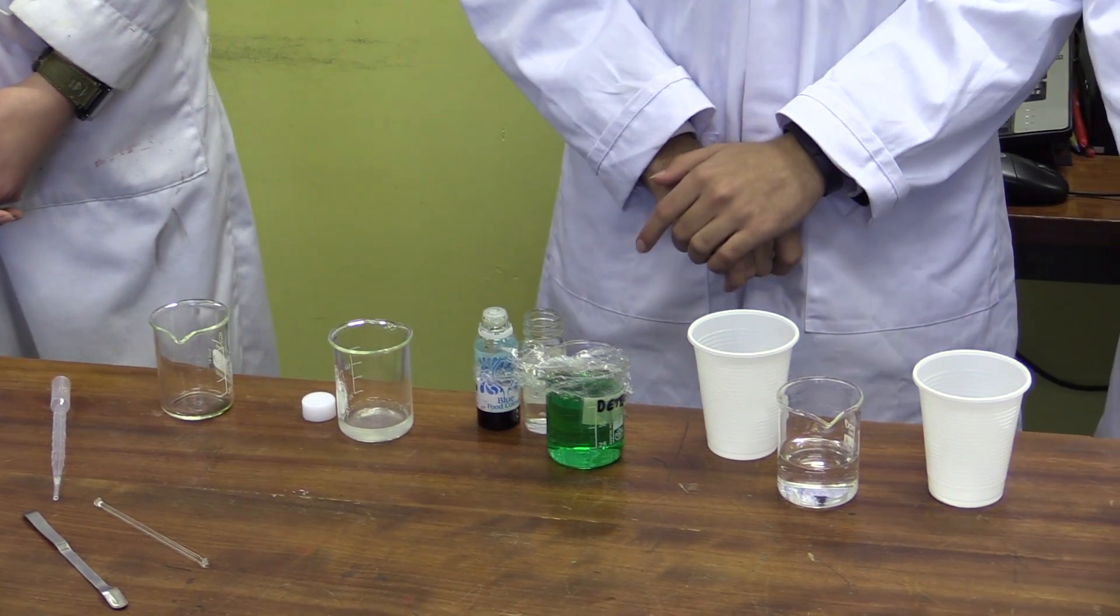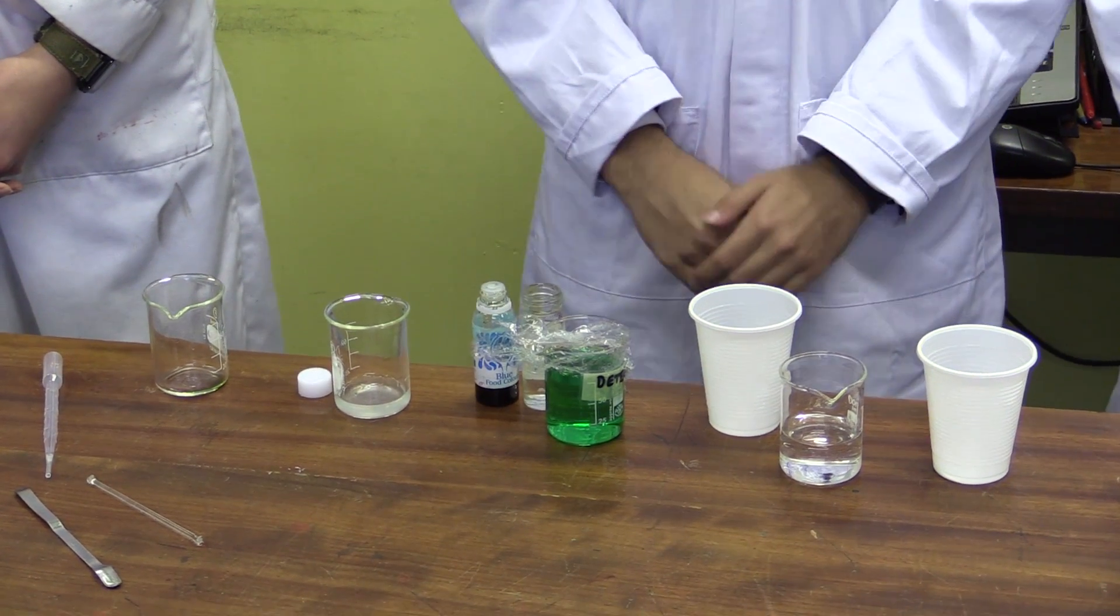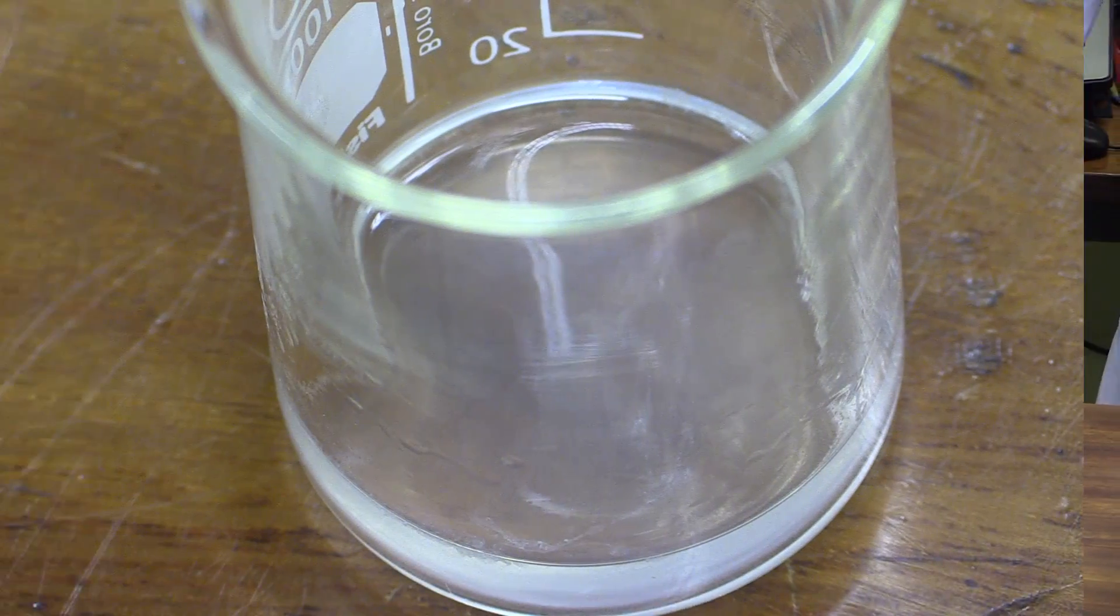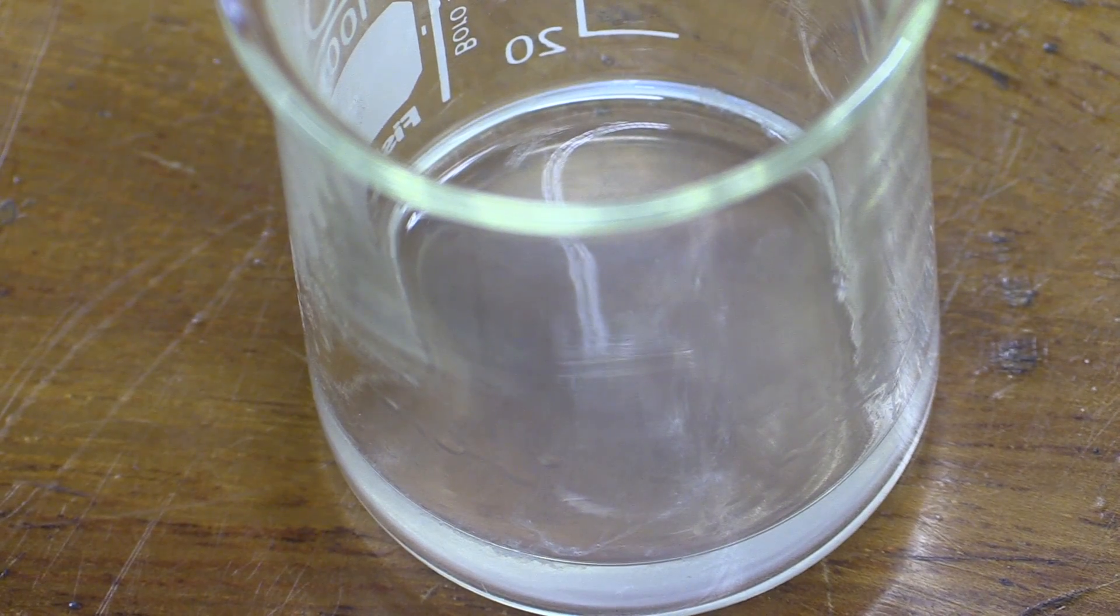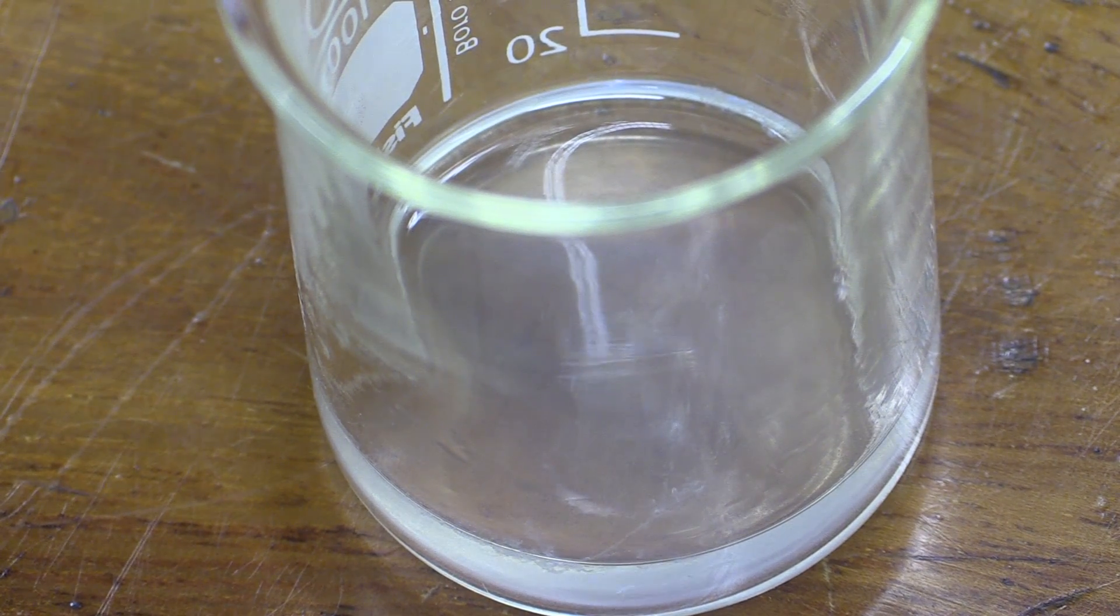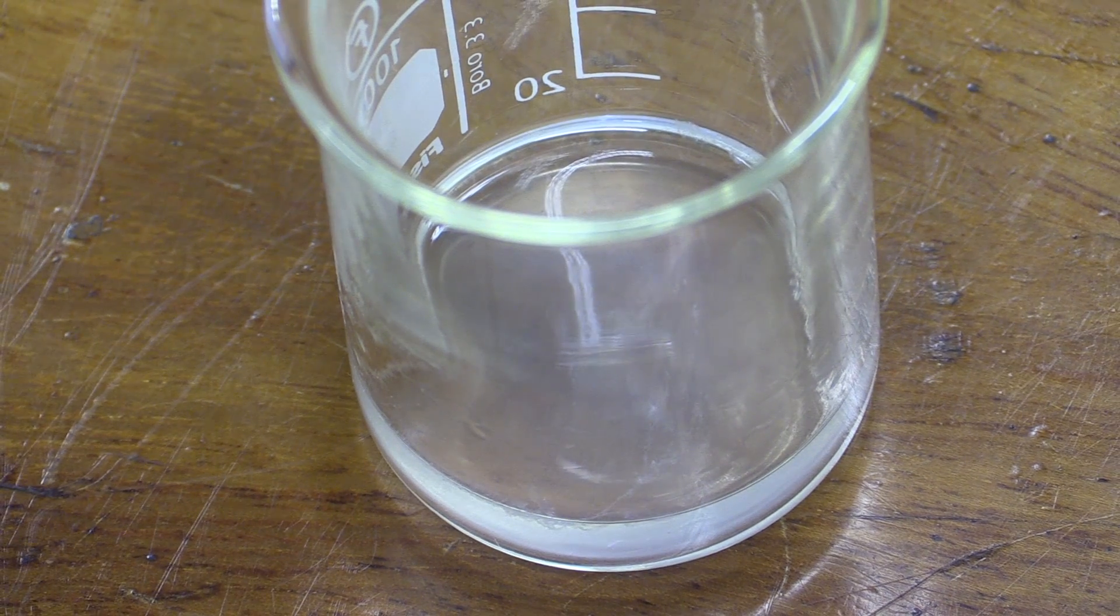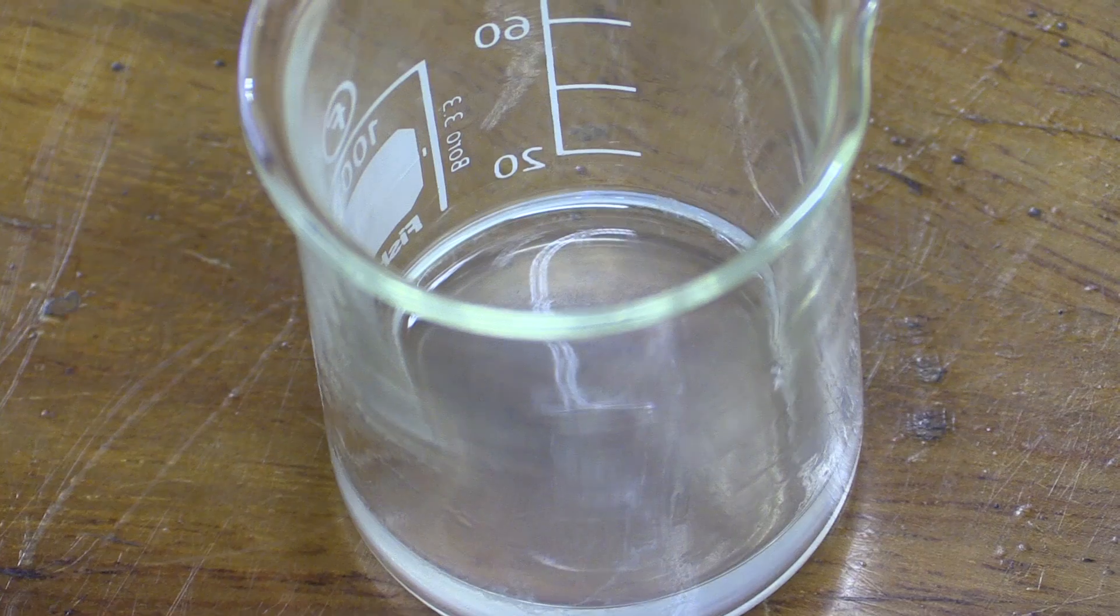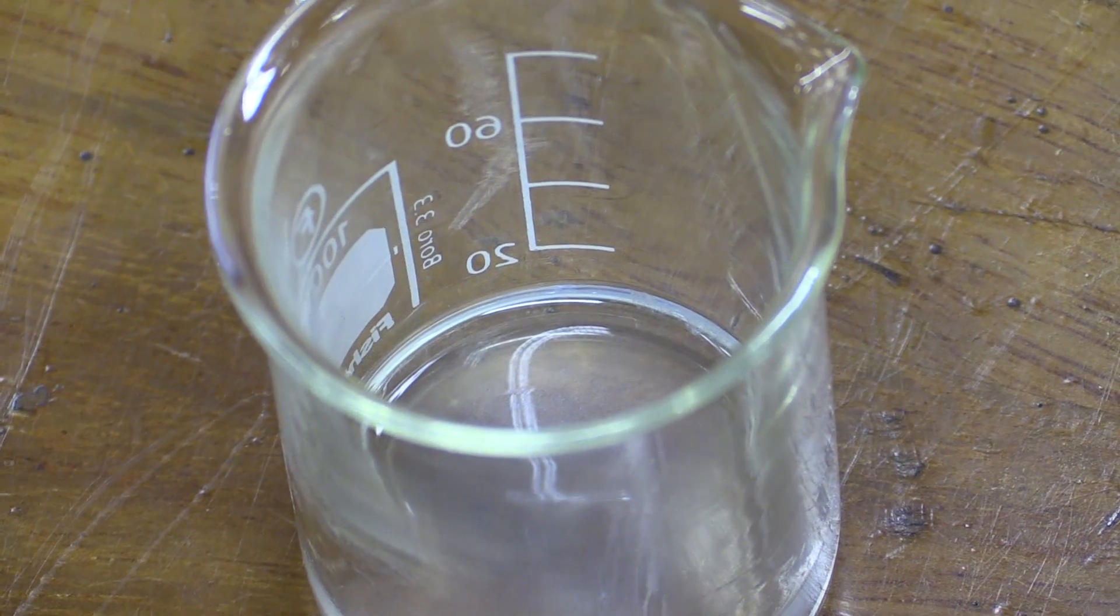After two to three minutes, we should see clumps of DNA forming at the top of the liquid. Now, after two to three minutes, you will probably see these clumps, or these strands, on the top of the surface of the liquid. These are made up of thousands of DNA molecules.